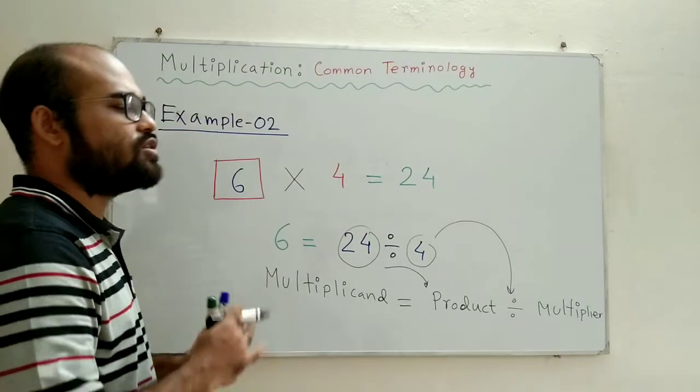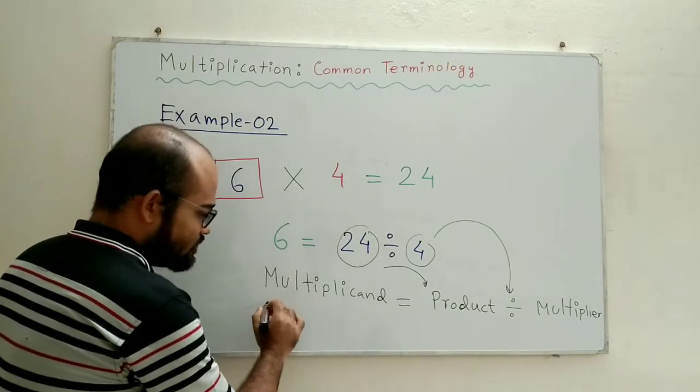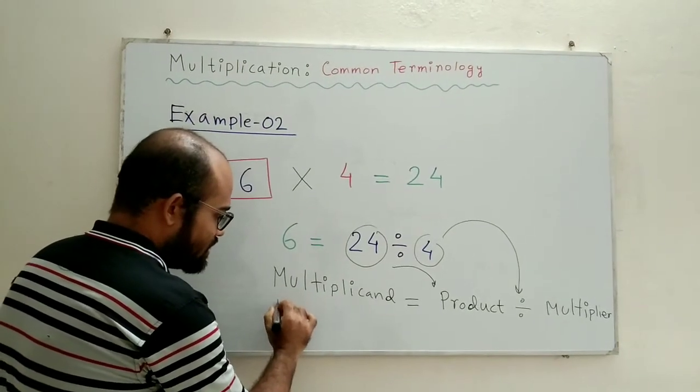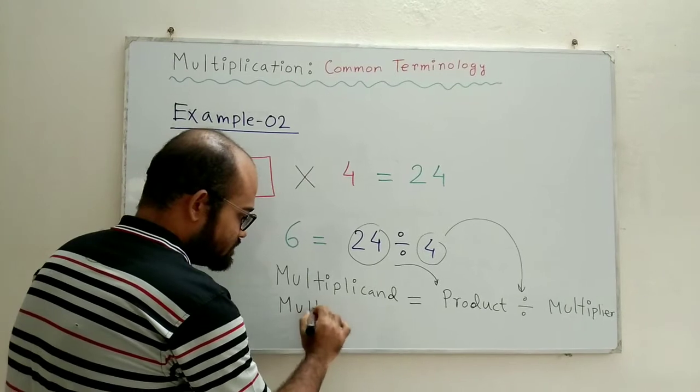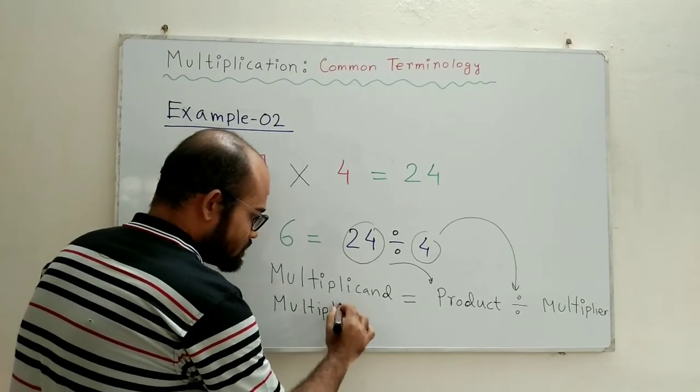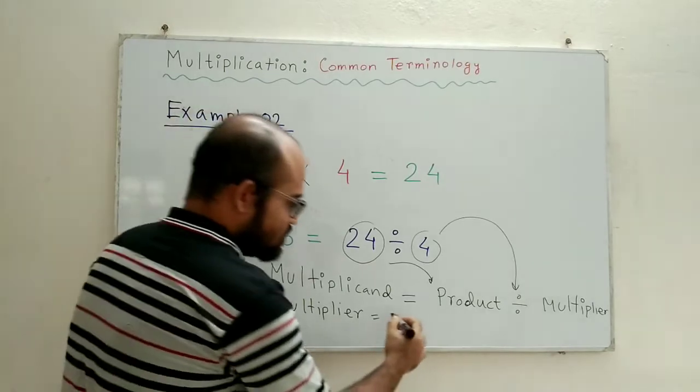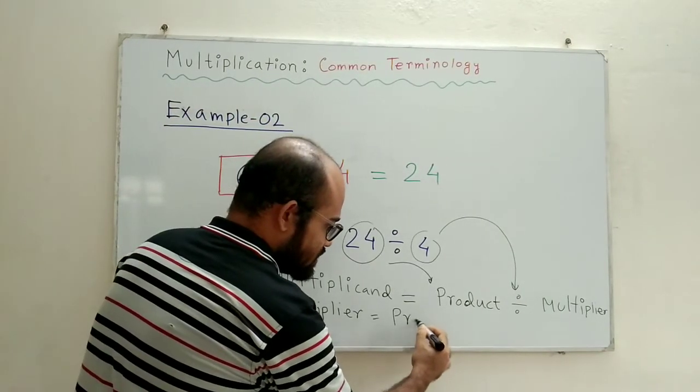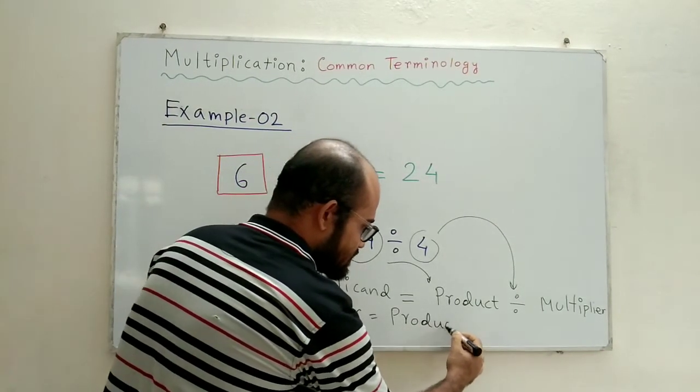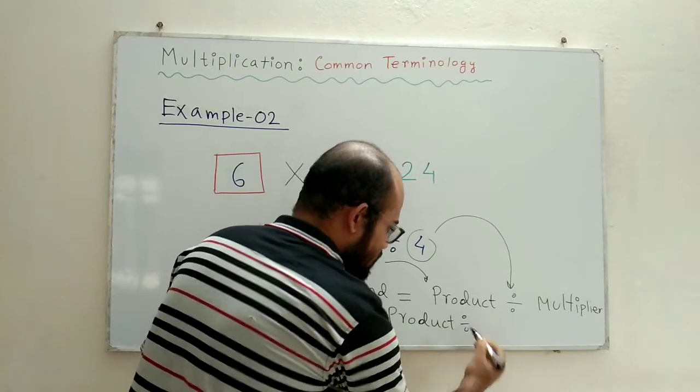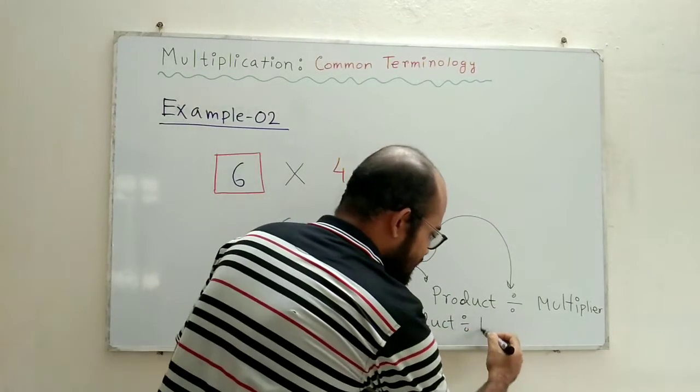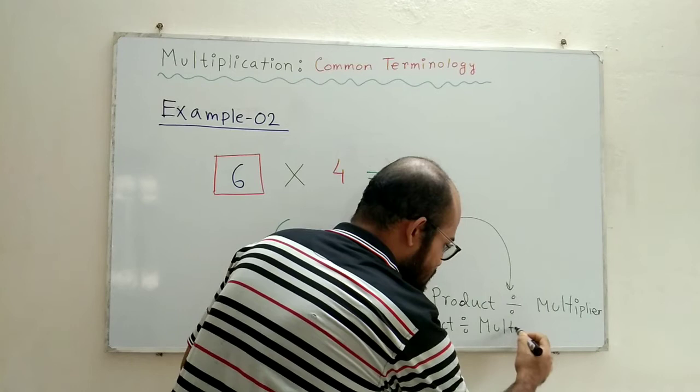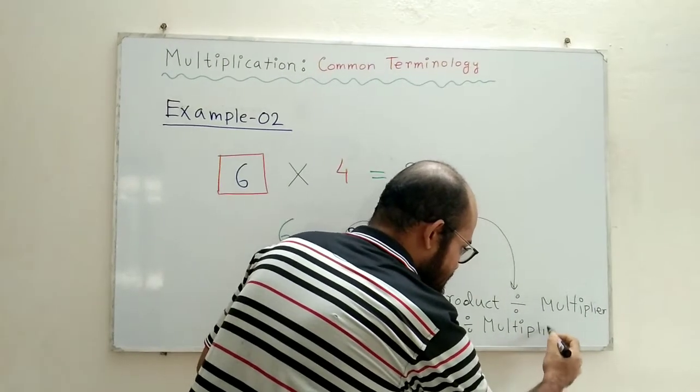Using the same logic, if we want to find the multiplier, we will have to divide the product with the multiplicand.